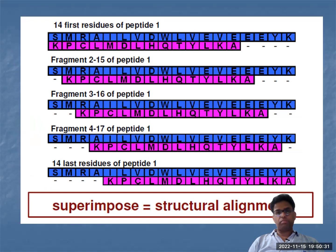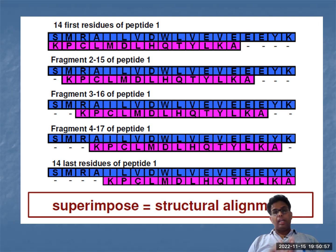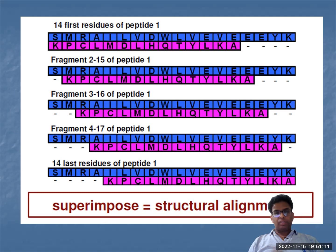In summary, the third option has the lowest RMSD value, making it the best alignment. The key points of structure alignment are: consider the root mean square deviation, understand why beta carbon is preferred over alpha carbon, and know that the lowest RMSD indicates high homology. The thresholds help determine whether structures are similar or different. Thank you very much.